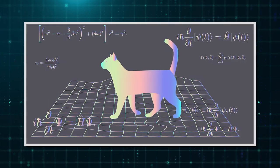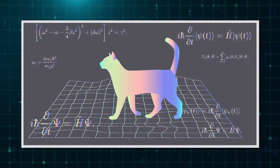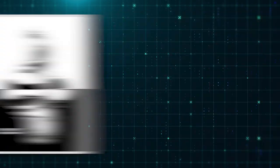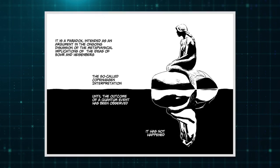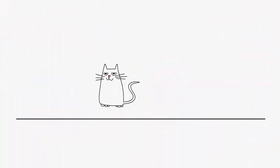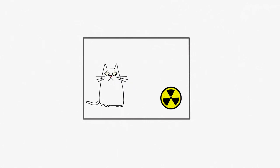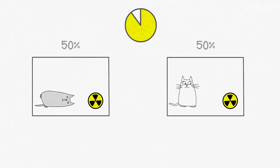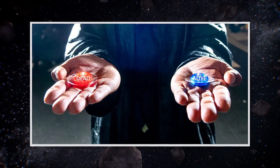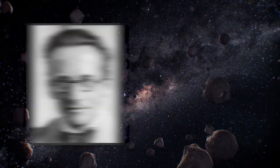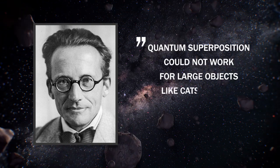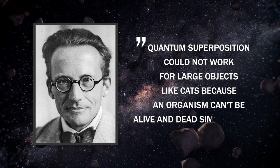But with his famous thought experiment known as Schrödinger's cat, Erwin Schrödinger connected the problem with Copenhagen interpretation in 1935. In his theoretical experiment, a cat is put inside a sealed box with some radioactive material and a Geiger counter. If the Geiger counter detects the radioactive material's decay, it releases a poison gas that kills the cat. While the box is sealed, the cat exists in a state of being both alive and dead. The cat is only forced into one of the two states when the box is opened. Schrödinger pointed out that this was absurd and that quantum superposition could not work for large objects like cats, because an organism can't be alive and dead simultaneously.